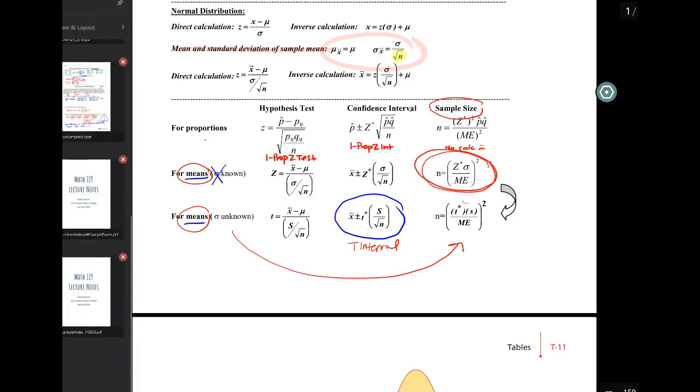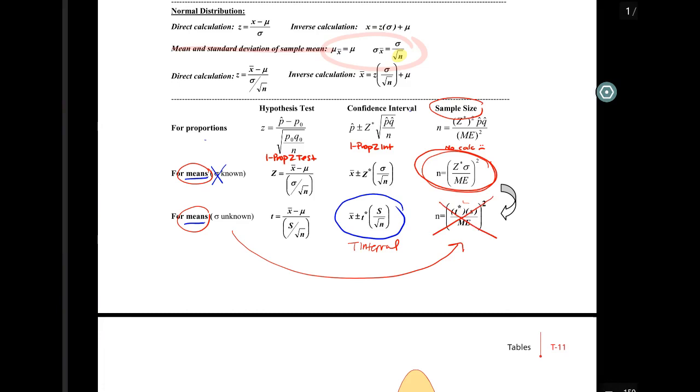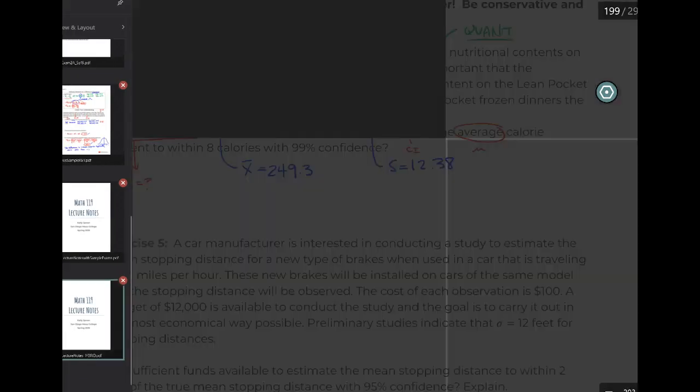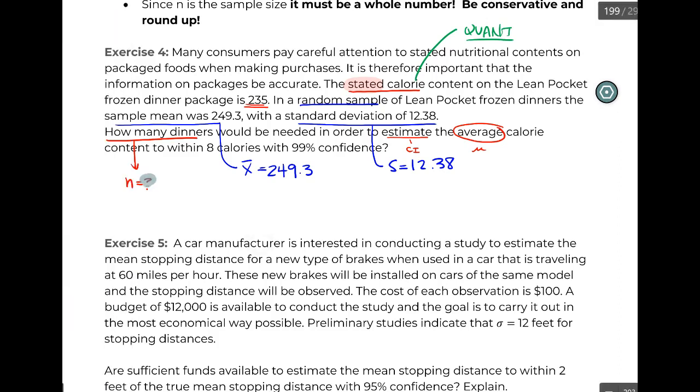We're going to use this formula because we don't have an n for t-star. I'm going to go ahead—I know I'm looking for an n, we're doing this for an average, which is another word to say mean, and technically we can't do t-star.